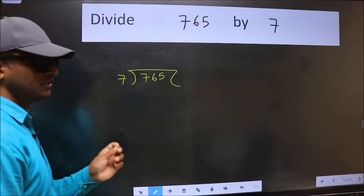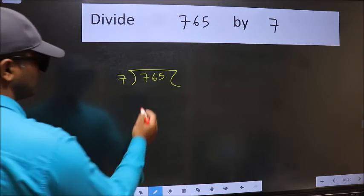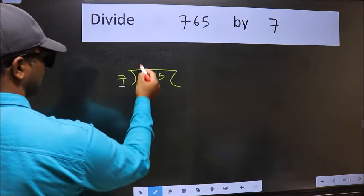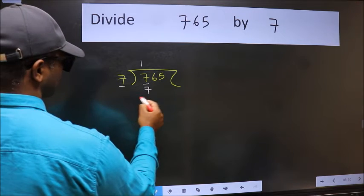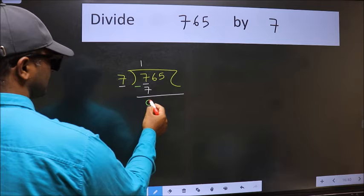This is your step 1. Next, here we have 7 and 7 here. When do we get 7 in the 7 table? 7 ones is 7. Now we should subtract. We get 0.